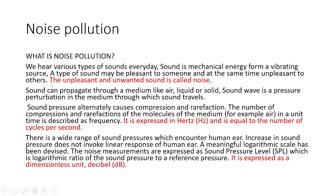A type of sound may be pleasant to someone and at the same time unpleasant to others. For example, the sound from a sitar or tabla feels very pleasant and soothing. In contrast, the sound from machinery — for example, drilling during road construction for a metro or overbridge — becomes unwanted and unpleasant for human beings. That unpleasant and unwanted sound is called noise. Sounds can propagate through a medium like air, liquid, or solid, and a sound wave is a pressure perturbation in the medium through which sound travels.